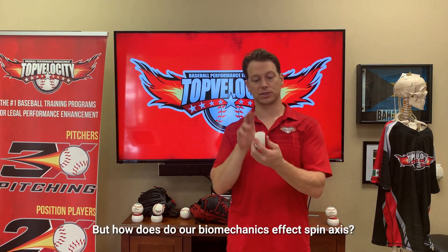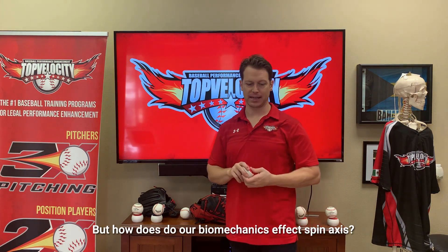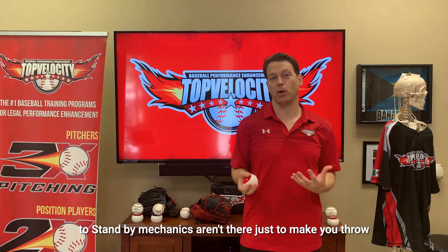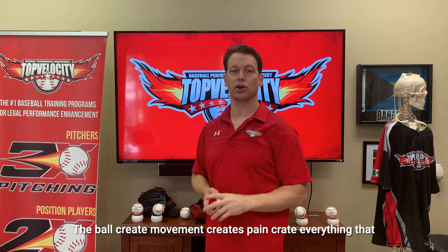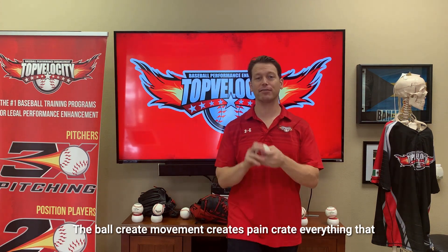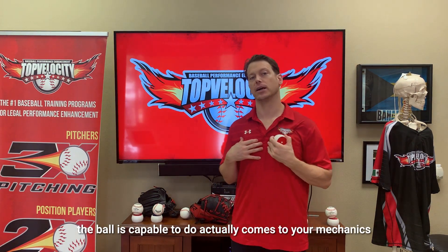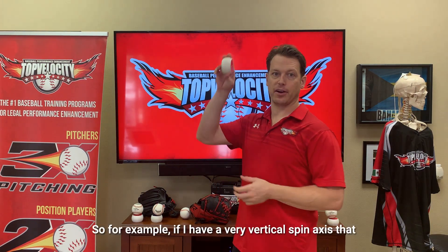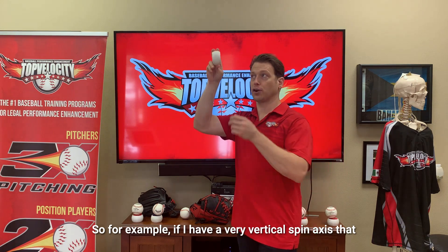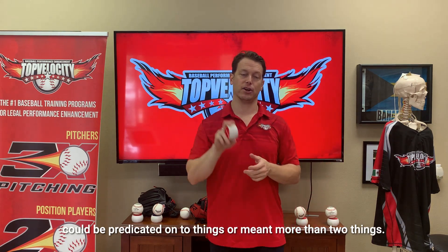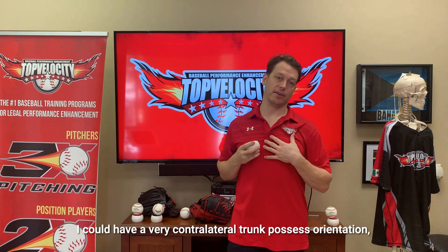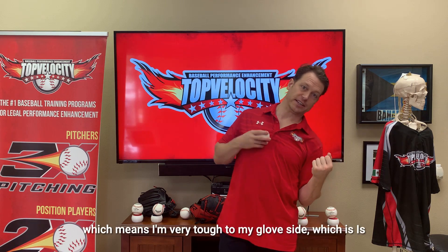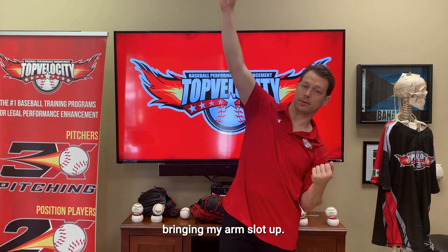So how do our biomechanics affect spin axis? That's really important here, because I want you to understand biomechanics aren't there just to make you throw hard — they're also there to help you move the ball, create movement, create spin. Everything the ball is capable of doing actually comes through your mechanics as well. For example, if I have a very vertical spin axis, that could be predicated on two things or more. I could have a very contralateral trunk orientation, meaning I'm very tucked to my glove side, which is bringing my arm slot up.